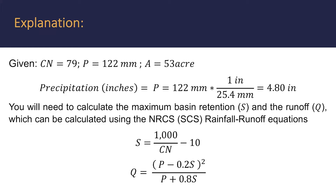To align the units, firstly let's convert the precipitation from millimeters to inches. If we do that, we come up with 4.80 inches. You will next need to calculate the maximum basin retention, denoted as S, and the runoff as capital Q, which can be calculated using the NRCS-SCS rainfall runoff equations that you can find in your FE reference handbook in the hydrology and water resources section. You can see those two equations there on the bottom of the screen.